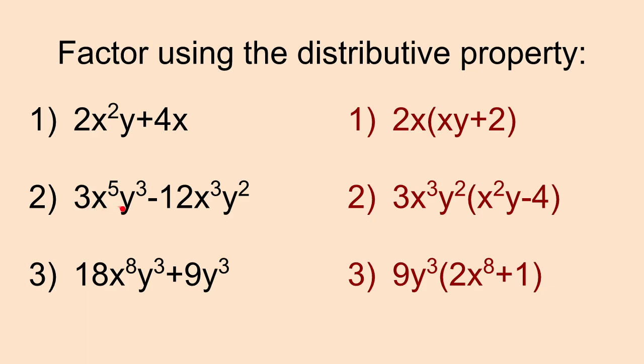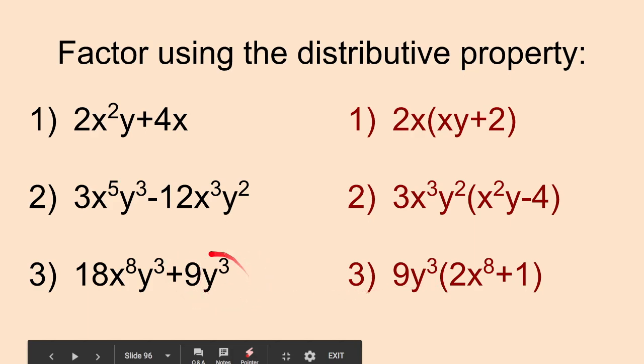That means that we would need to multiply by an x²y. And in order to get this second term here, it is a negative term, so we need to multiply by a negative 4. And our third one here, we have 9y³ is the only thing that we could factor out. We could not factor out any x's because our second term does not have any x's in it. So when we factor this 9y³ out, we are left with 9y³(2x⁸ + 1).